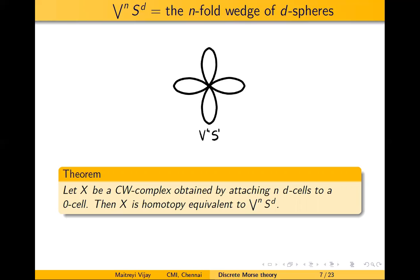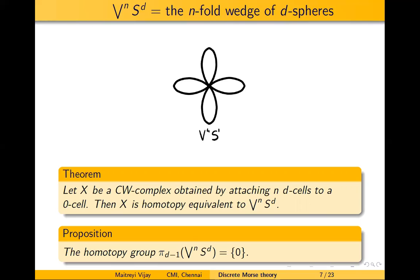This result appears in multiple examples we will see, so it is quite important. The proof involves calculating that the (d−1)-homotopy group of the wedge of N S^d's is zero. You can prove it using the simplicial approximation theorem and induction by showing that the wedge of N S^d's without a point is homotopy equivalent to the wedge of N S^(d−1)'s. I won't be proving it here as it is quite long.